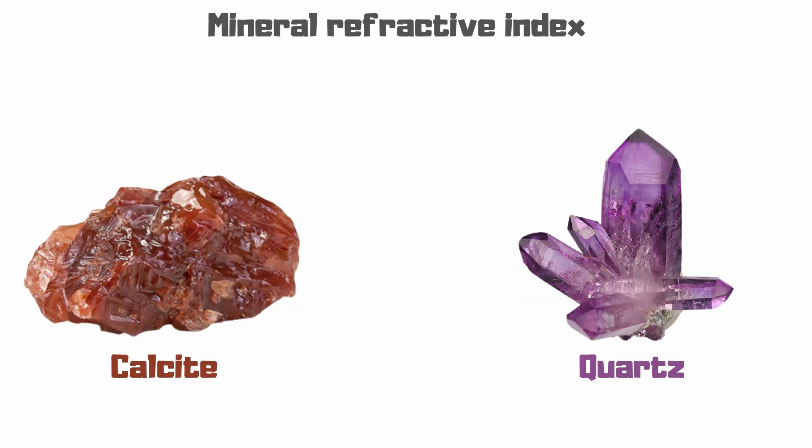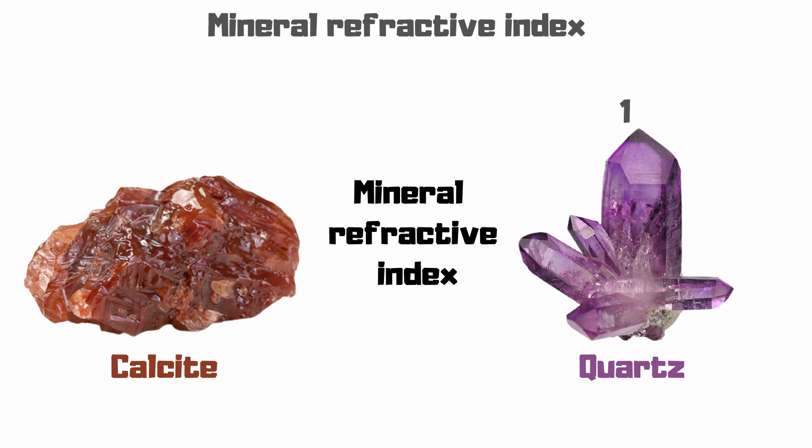In refractive indices, calcite has a refractive index of 1.49 and 1.66. On the contrary, quartz has a refractive index of 1.55.